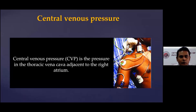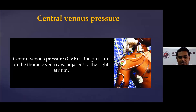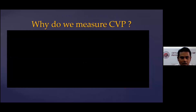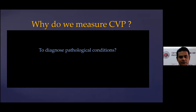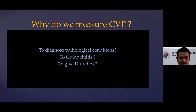Central venous pressure — the CVP — is the pressure in the thoracic vena cava adjacent to the right atrium. You've seen patients with central lines where we monitor the central venous pressure, and sometimes you'll see a graph showing the CVP waveform. The question is: why do we measure central venous pressure? Is it to diagnose pathological conditions? To guide fluids? To guide diuretic use? Or just because it's there and we monitor it?